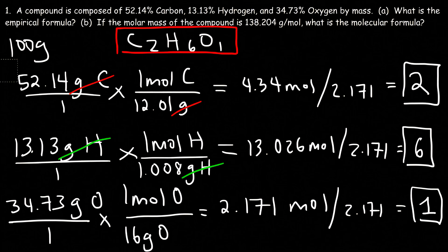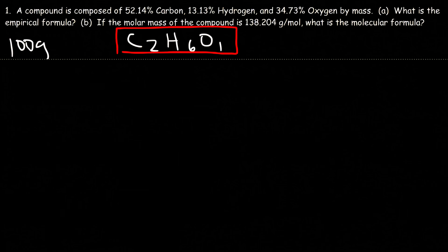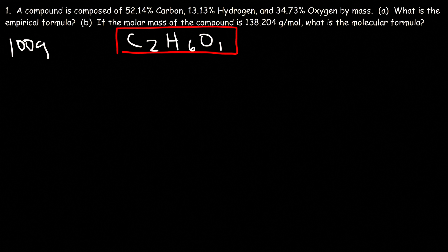Now let's move on to part B. If the molar mass of the compound is 138.204 grams per mole, what is the molecular formula?